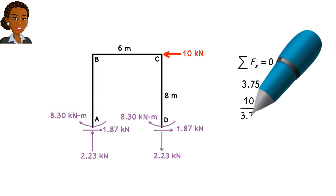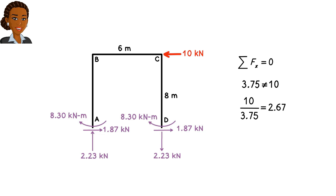The horizontal reaction forces at A and D add up to 3.75. So, we are off by a factor of 2.67. That is, we would have ended up with the correct support reactions if our initial assumed value for the fixed end moments was negative 26.7 instead of negative 10.